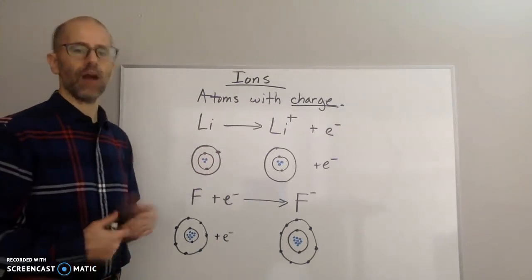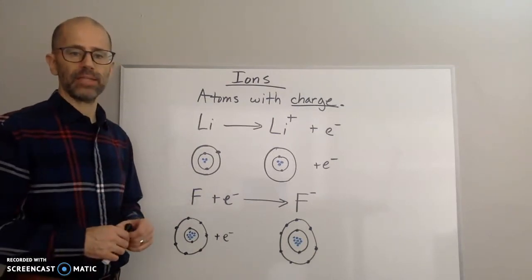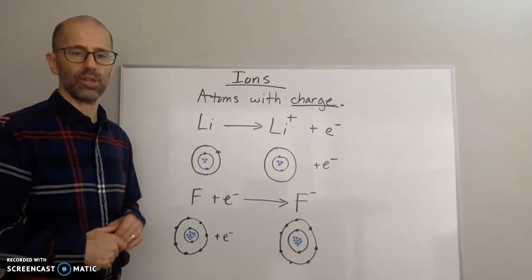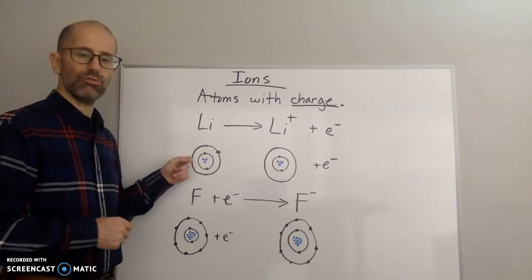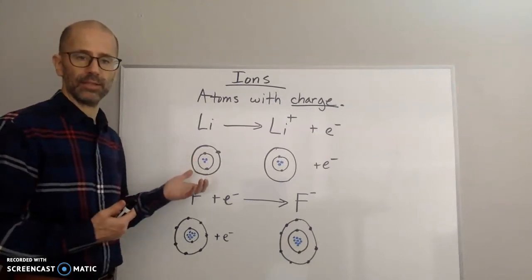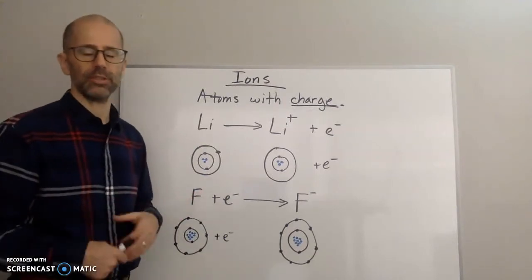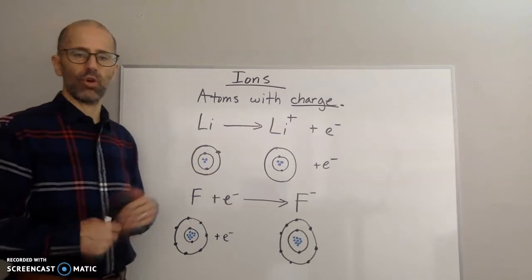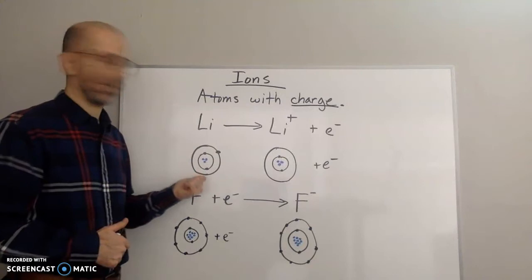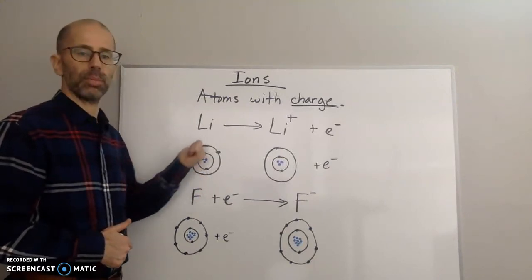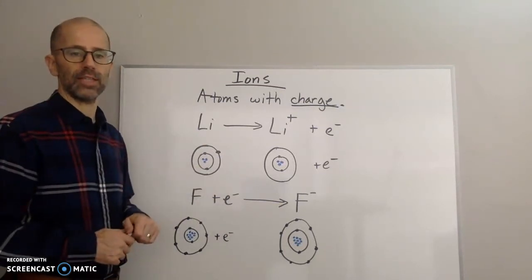There are times where the atom will have a charge based on the loss of electrons. The element will keep its identity because you do not lose the protons. In normal chemical reactions — as opposed to nuclear reactions where you can change the nucleus — the neutrons and protons stay the same, but it's the number of electrons that change. And that is what creates the charge.